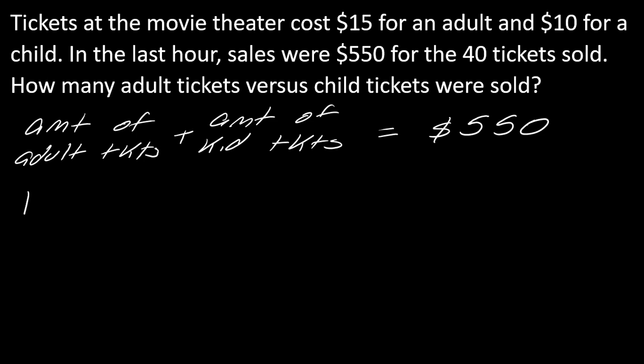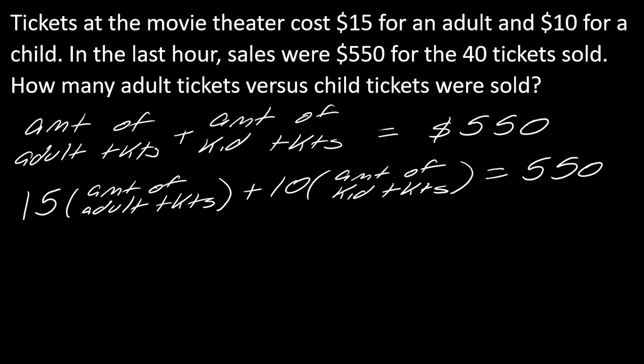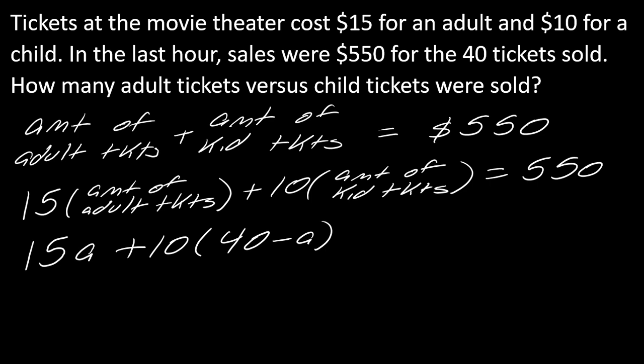In this case, I need $15 times the amount of adult tickets, and $10 times the amount of kid tickets. That's how I bring in money times quantity. I know the total quantity needs to come out to 40, but I have no other information, so this is going to be very similar to our last setup. I'll use the letter A for adult tickets. To get the kid tickets, I take 40 minus A — the same idea as before. So I have A for adults and 40 minus A for kids.